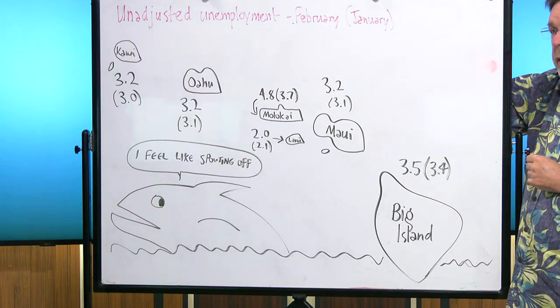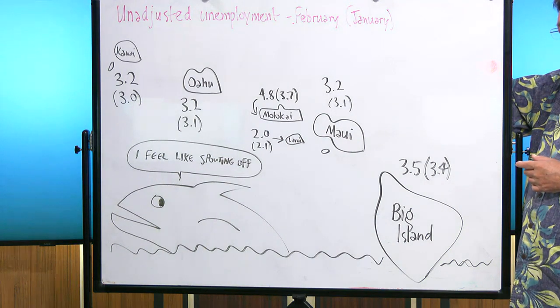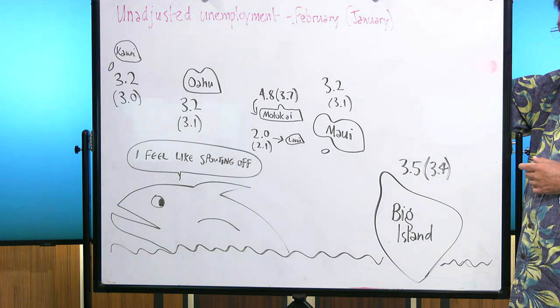Molokai rose to 4.8 percent, which is still lower than usual for the Friendly Isle. The lowest rate in the state was Lanai, 2 percent flat.